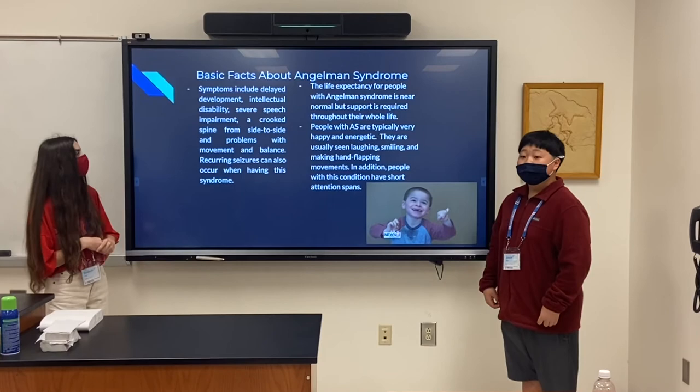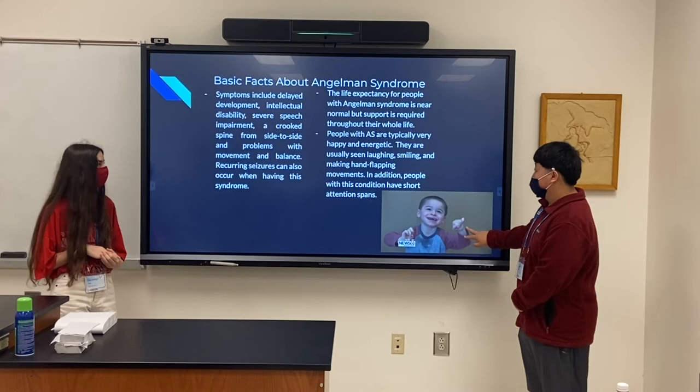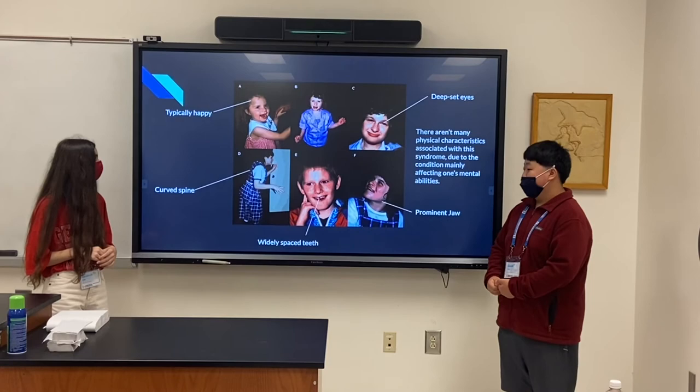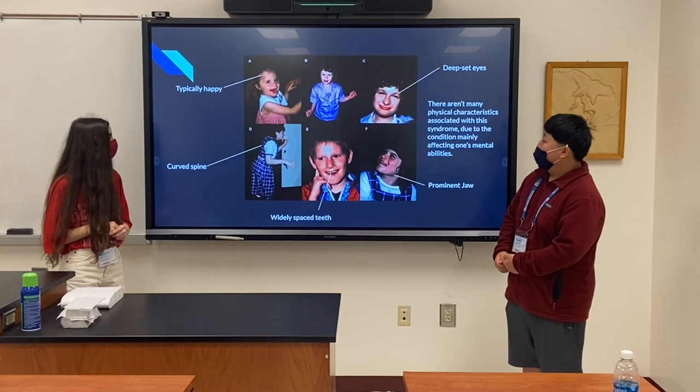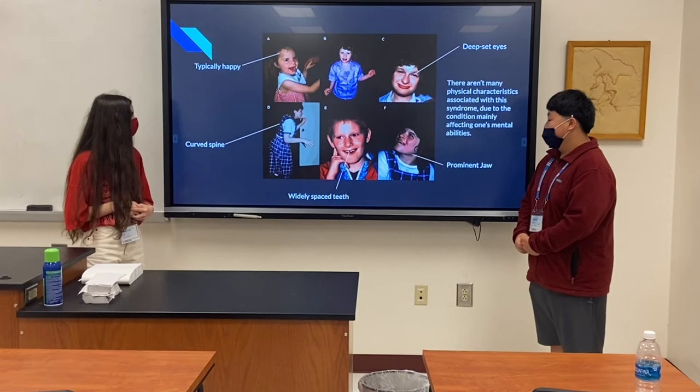People with Angelman Syndrome are typically very happy and energetic, usually seen smiling and laughing, and they also have short attention spans. There are many physical characteristics associated with this syndrome. In picture A, you have the typically happy, always-smiling attitude. In picture C, you have deep-set eyes. In picture D, you can see the curved spine. In picture E, you can see the widely spaced teeth. And in picture F, you can see the prominent jaw.